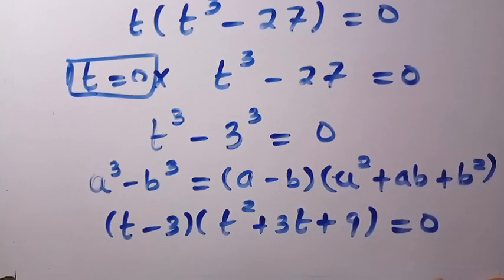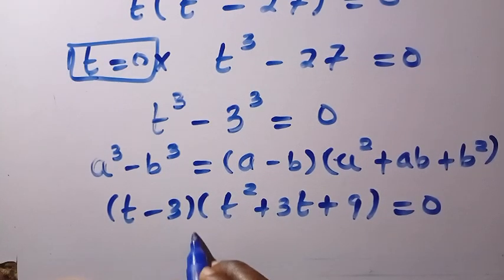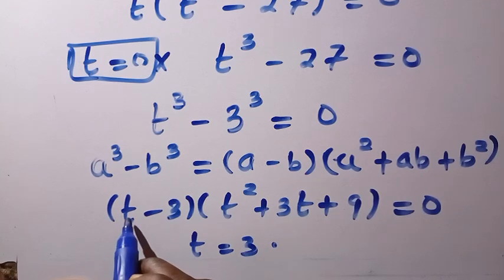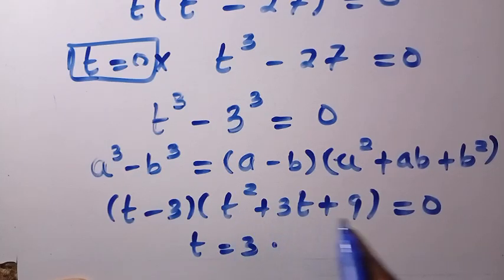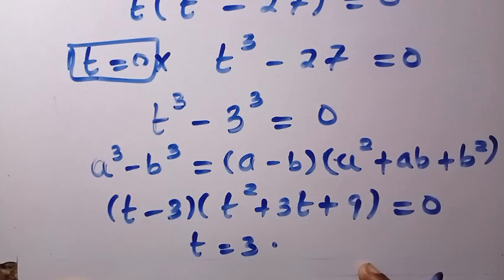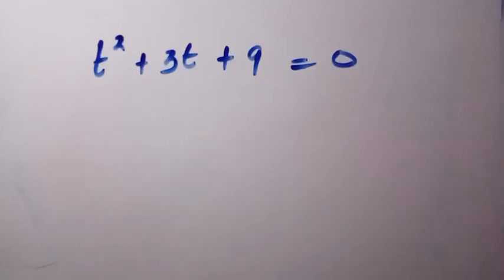From this factored form, we get the first solution: t equals 3, since t minus 3 must equal 0 for that factor to be zero. We've gotten the first value of t, which is 3. Now for the other two solutions — since it's a cubic, we expect 3 solutions total — we look at the quadratic factor t squared plus 3t plus 9 equals 0.